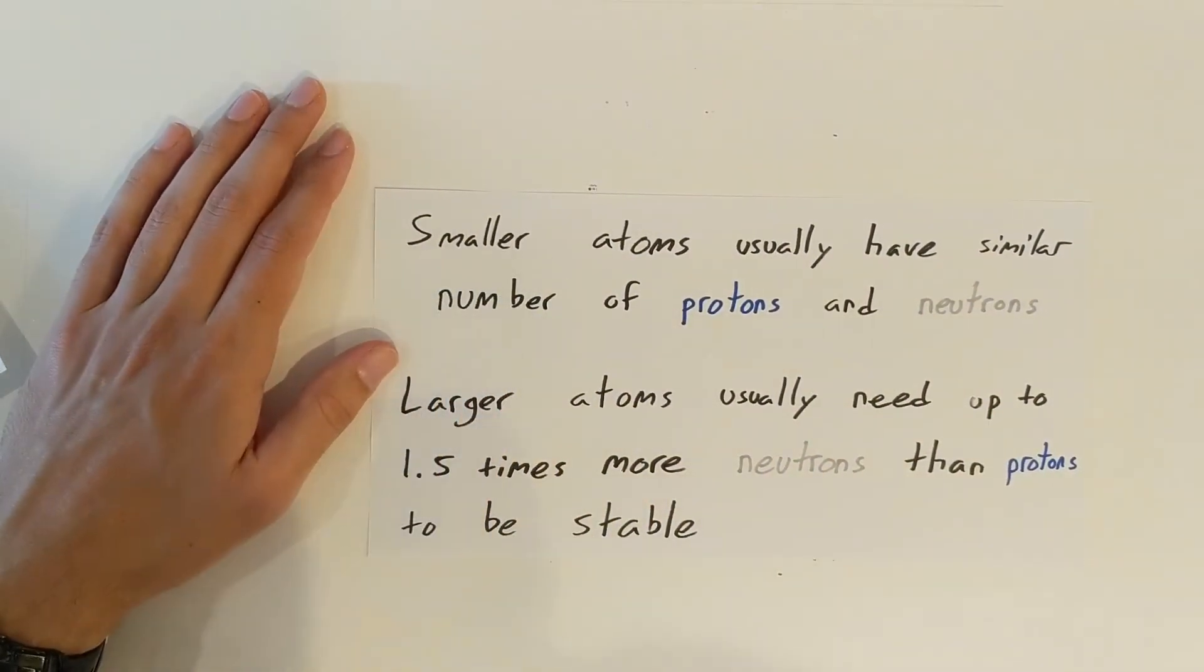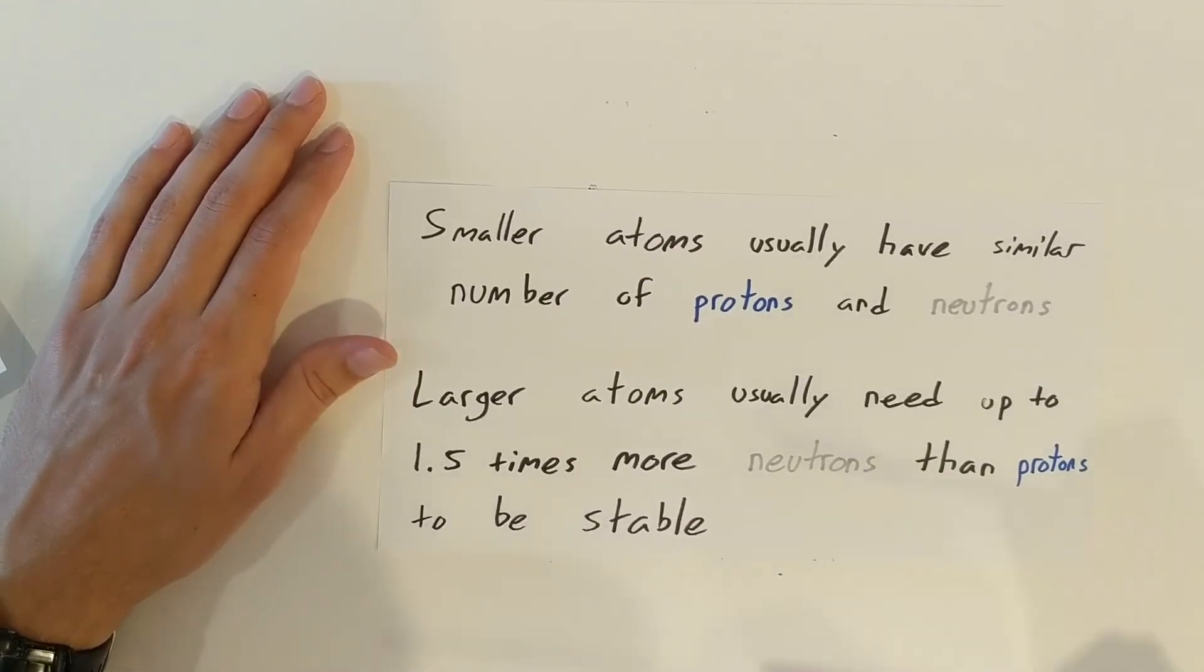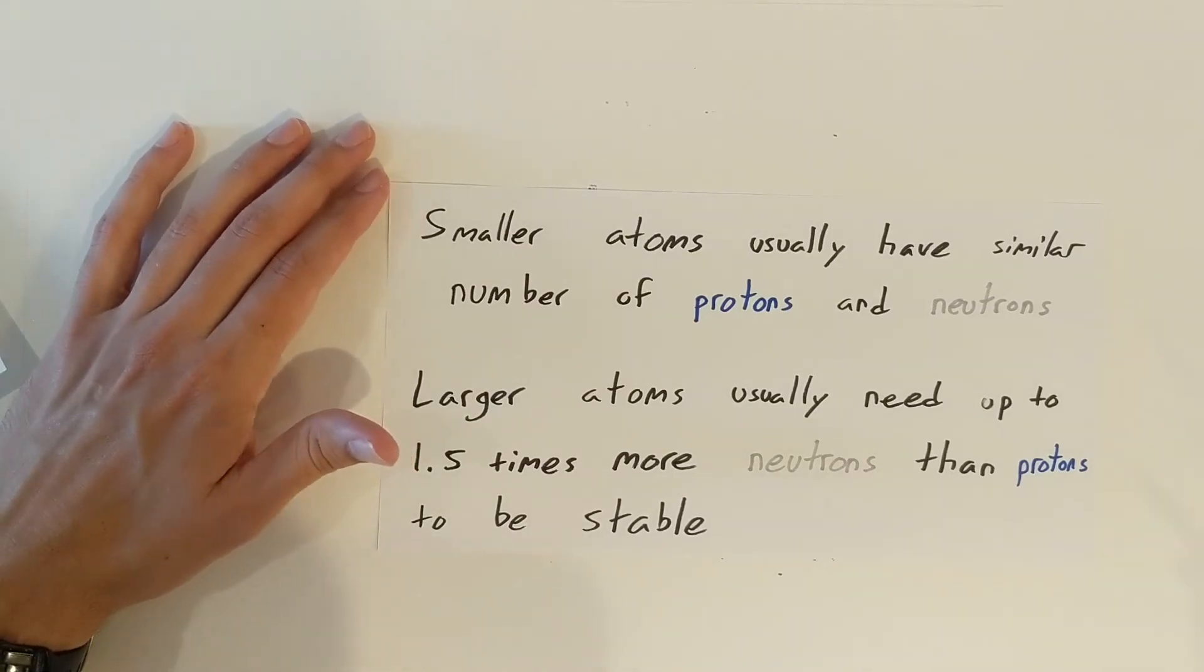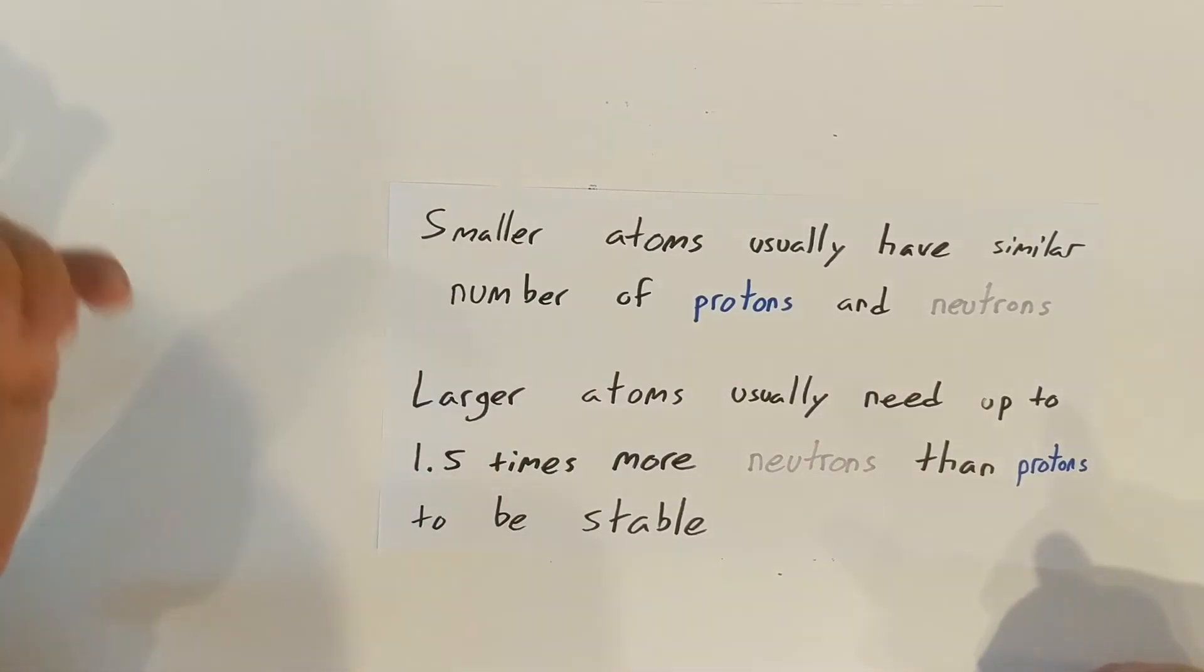So smaller atoms usually have a similar number of protons and neutrons. We could think of carbon. Carbon has six protons and between six or seven neutrons usually. Oxygen has eight protons and eight neutrons usually. So those would be smaller atoms.